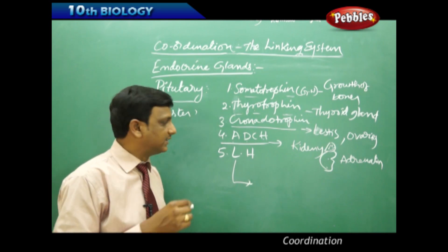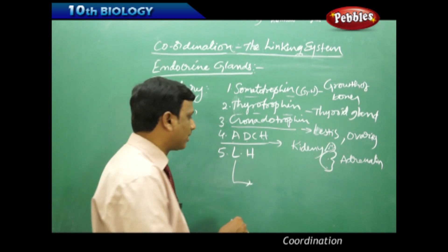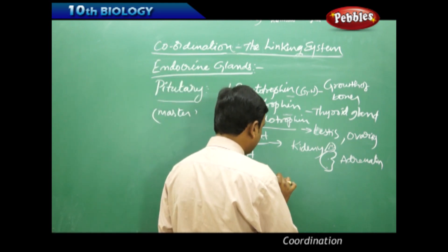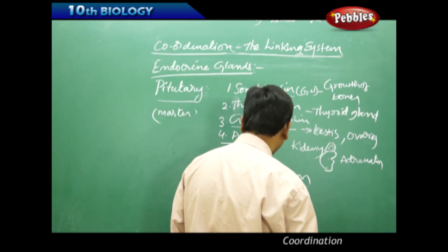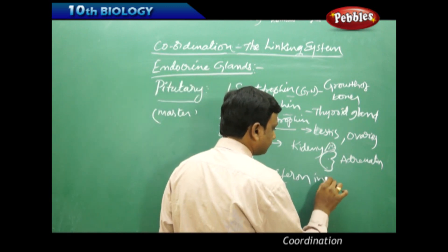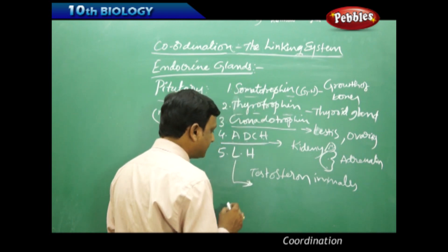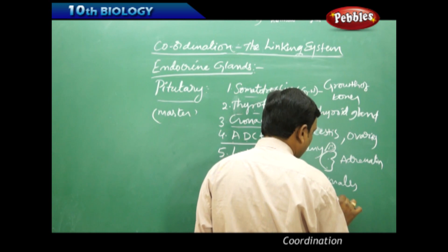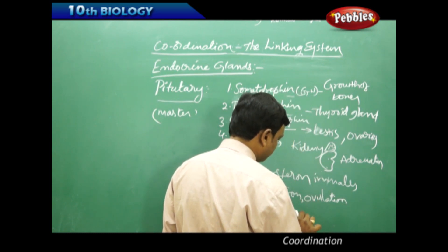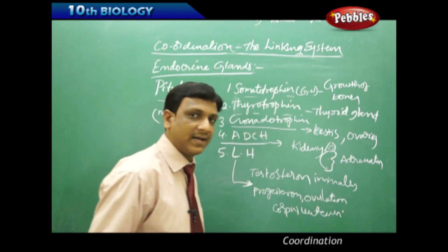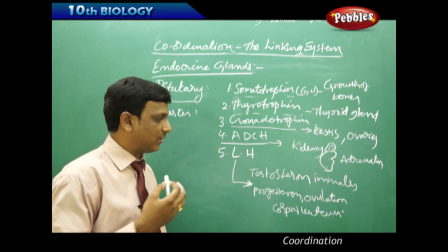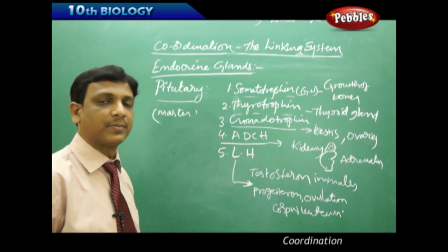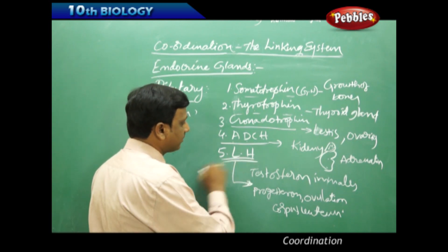LH stands for luteinizing hormone. In males, the luteinizing hormone initiates the production of testosterone in the testes. In females, it stimulates the production of progesterone, helps in ovulation, and also helps in the development of the corpus luteum. For the process of reproduction and the development of reproductive organs, this luteinizing hormone contributes and stimulates.